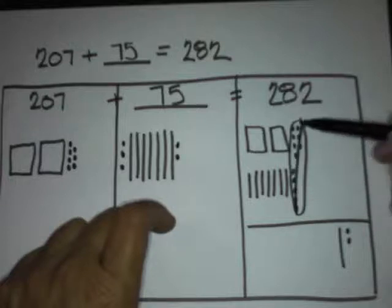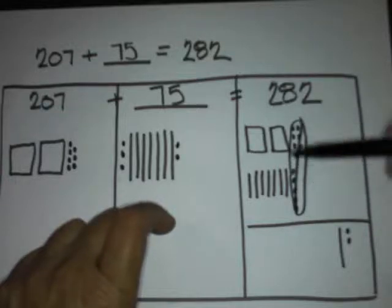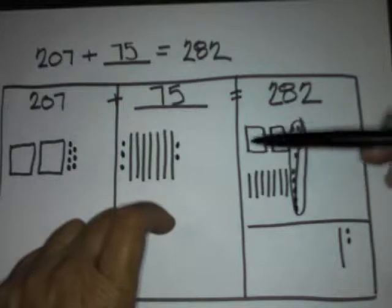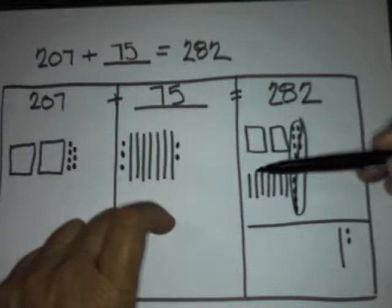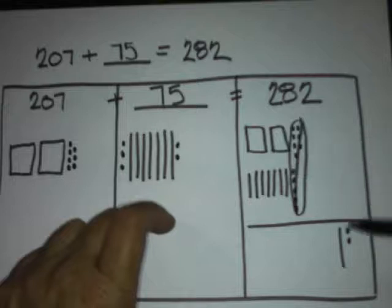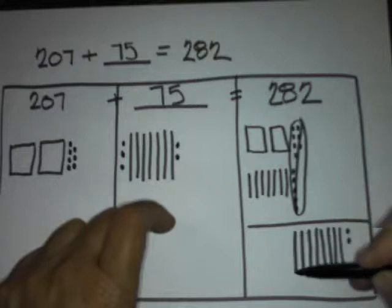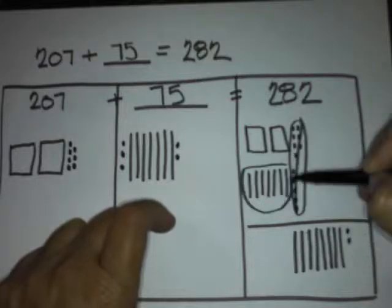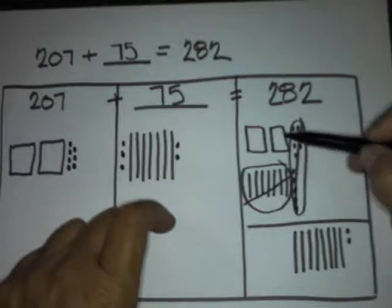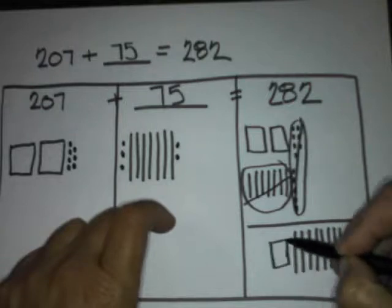Now let's count on by 10 — let's see how many 10s we have left: 1, 2, 3, 4, 5, 6, 7. Look how I'm going backwards: 4, 5, 6, 7. I just regrouped that. Now what do I have left? 2 hundreds. Watch how I can go backwards — isn't that fun?